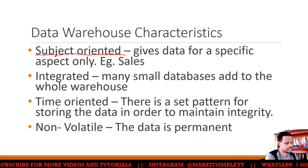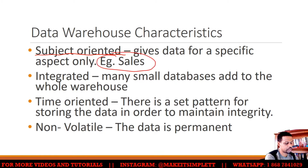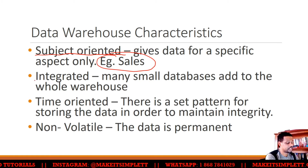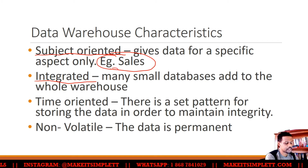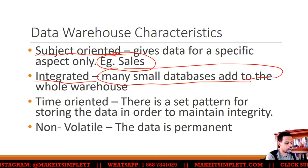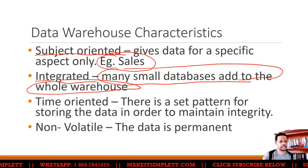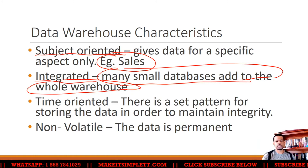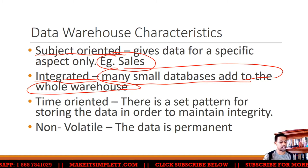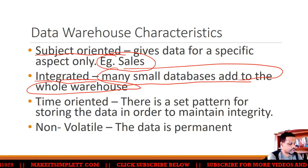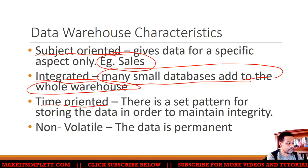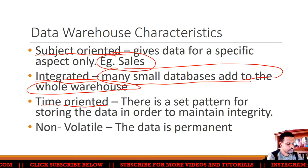Data warehouse characteristics: it is subject-oriented, meaning it gives data for a specific aspect only, such as sales. It is integrated, meaning there are many small databases that add up to the whole warehouse — you might pull a database from a hospital, a clinic, and a police station, and they all come together. It is time-oriented, meaning there is a set pattern for storing data to maintain integrity — for example, data is updated every 24 hours.